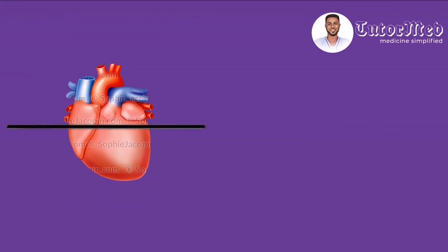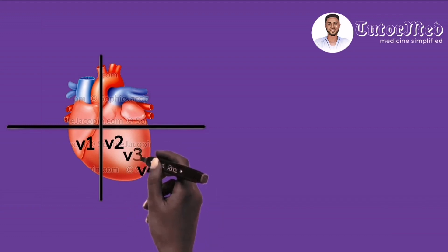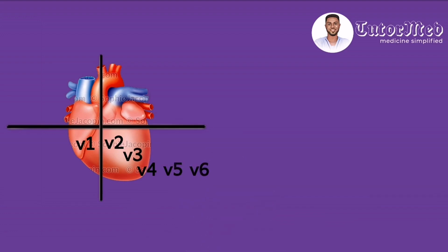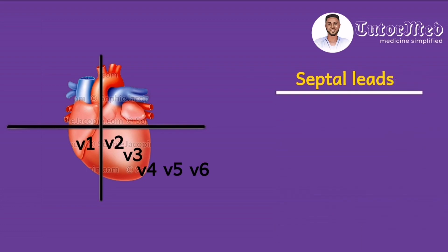Now for the chest leads: draw the heart again with your four cardinal points — horizontal and vertical lines. Place the first chest lead as V1, then V2. If you're familiar with how we place the chest electrodes, you'll know V4 goes at the apex of the heart before V3, which is placed between V2 and V4, followed by V5 and V6. Based on this drawing, the septal leads — which visualize the septum — are V1, with or without V2.